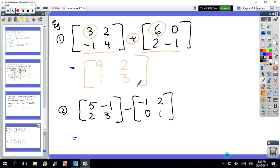Can you have a go at the next one? The only thing I've done is changed it to subtraction. So pause the tape, and when you're ready, come back. Okay, so we're back. 5 minus minus 1 is 6, minus 1 minus 2 is minus 3, 2 minus 0 is 2, 3 minus 1 is 2.